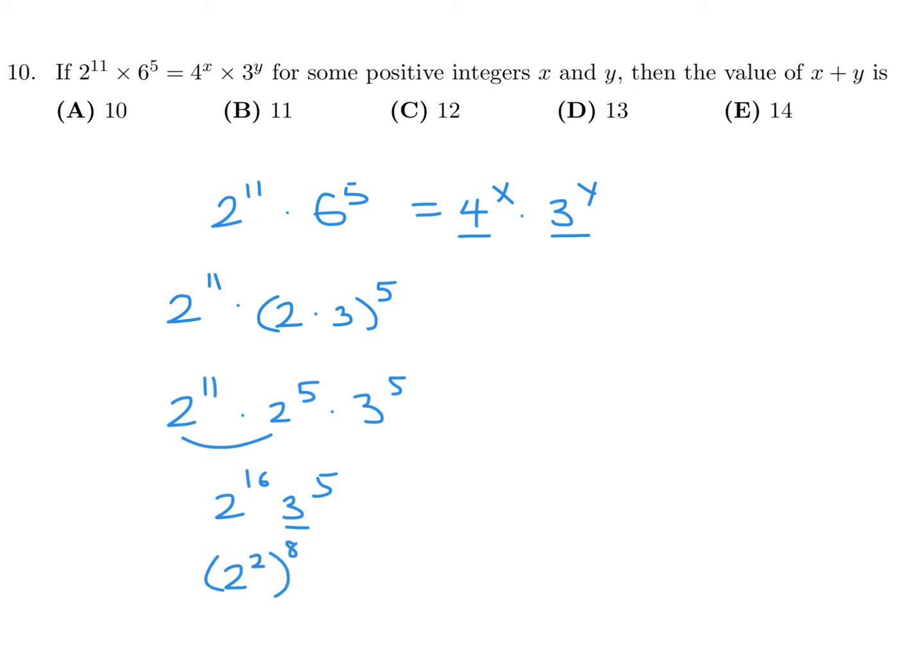And then that will be 8, right? Yeah. And then therefore, this looks to me like 4 to the power of 8 and 3 to the power of 5. And that was equivalent to 4 to the power of x, 3 to the power of y. So therefore, matching up exponents, x is equal to 8, y is equal to 5. And therefore, x plus y is 8 plus 5, which is 13. Therefore, the answer is D.